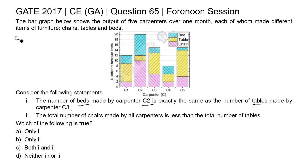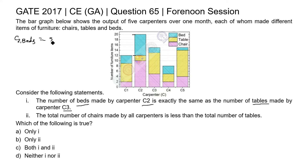For C2, the number of beds is depicted by green color in the bar graph. The upper limit is 20 and the lower limit is 12, so 20 minus 12 equals 8. The number of beds made by carpenter C2 is 8.